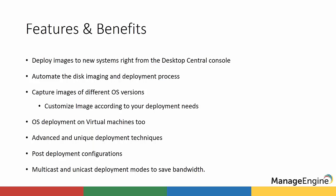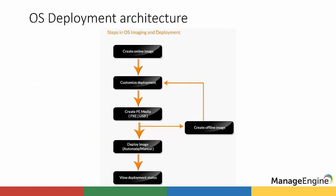A centralized master image can be captured and deployed to multiple vendor platforms. For example, you can capture an image of an HP machine and deploy it across Dell or other vendors — that is definitely possible, as the driver repository will automatically pick up those drivers. Now let's look at the architecture behind OS deployment within Desktop Central.